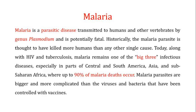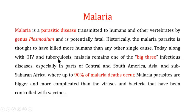To discuss peptide vaccines, we will use malaria as an example. Malaria is a parasitic disease transmitted to humans and other vertebrates by the genus Plasmodium, and it is potentially fatal. Historically, the malaria parasite is thought to have killed more humans than any other single cause. Today, malaria remains in the 'big three' infectious diseases along with HIV and tuberculosis, especially in central and south America, Asia, and sub-Saharan Africa, where up to 90% of malaria deaths occur.